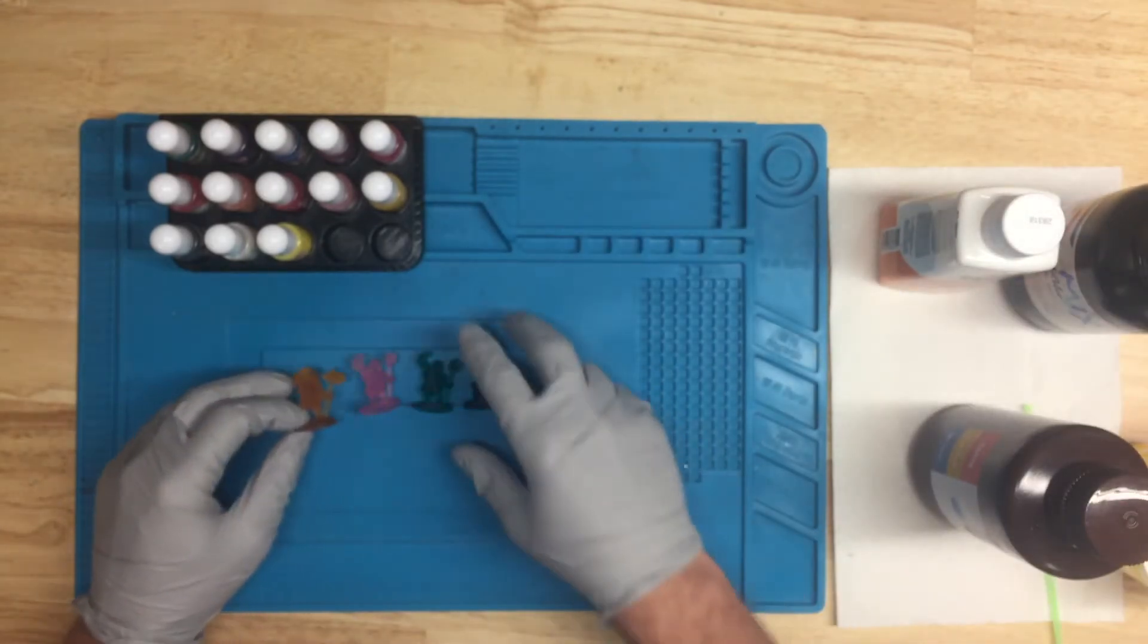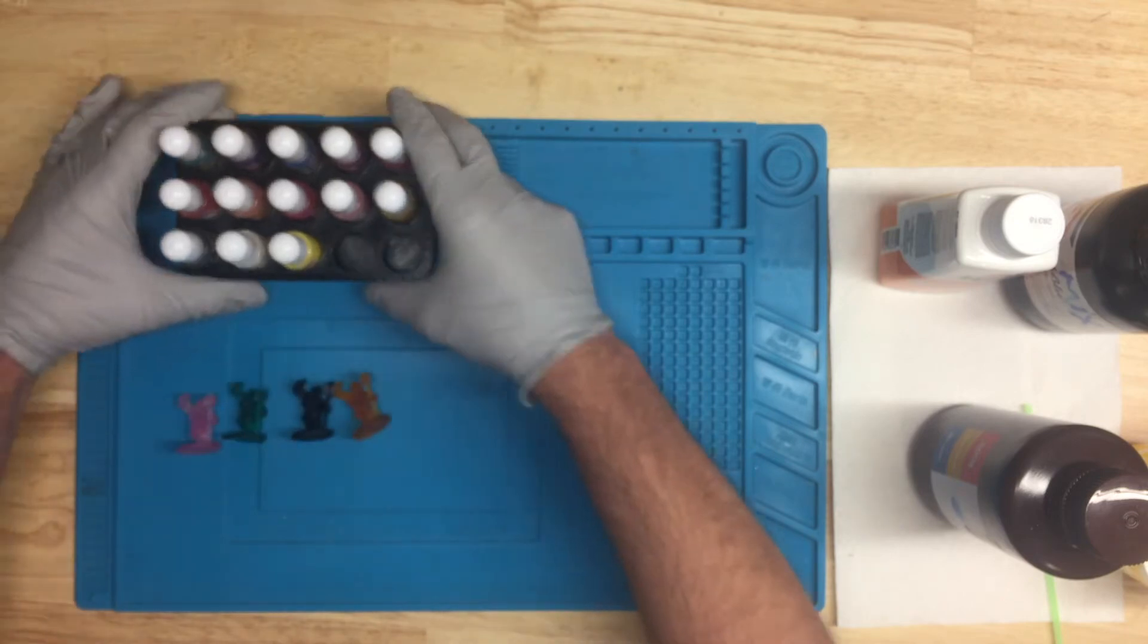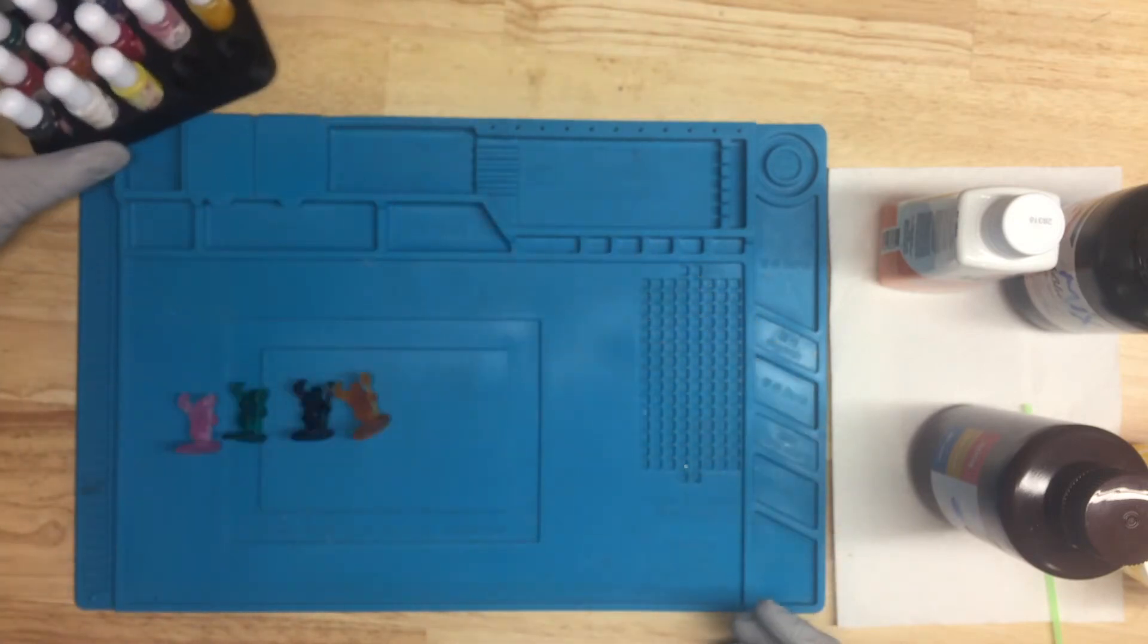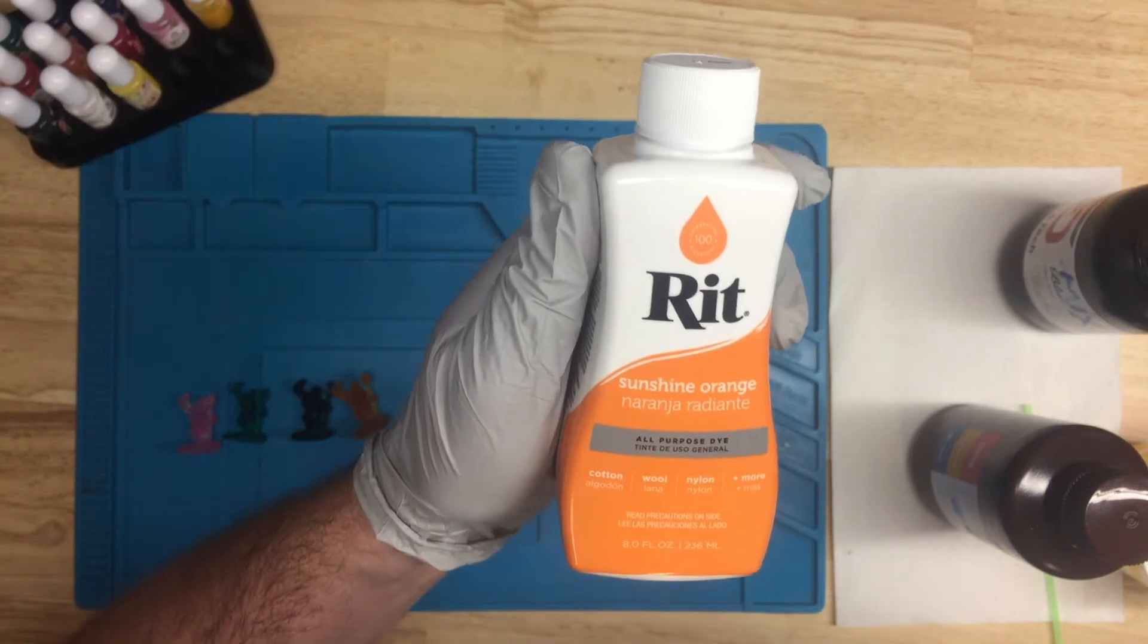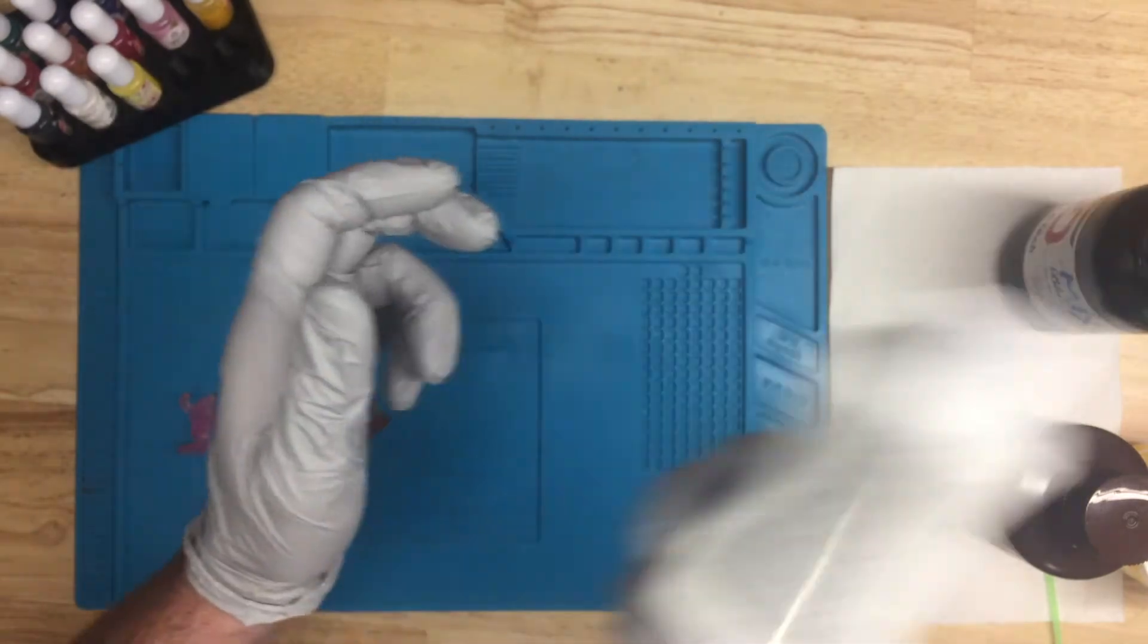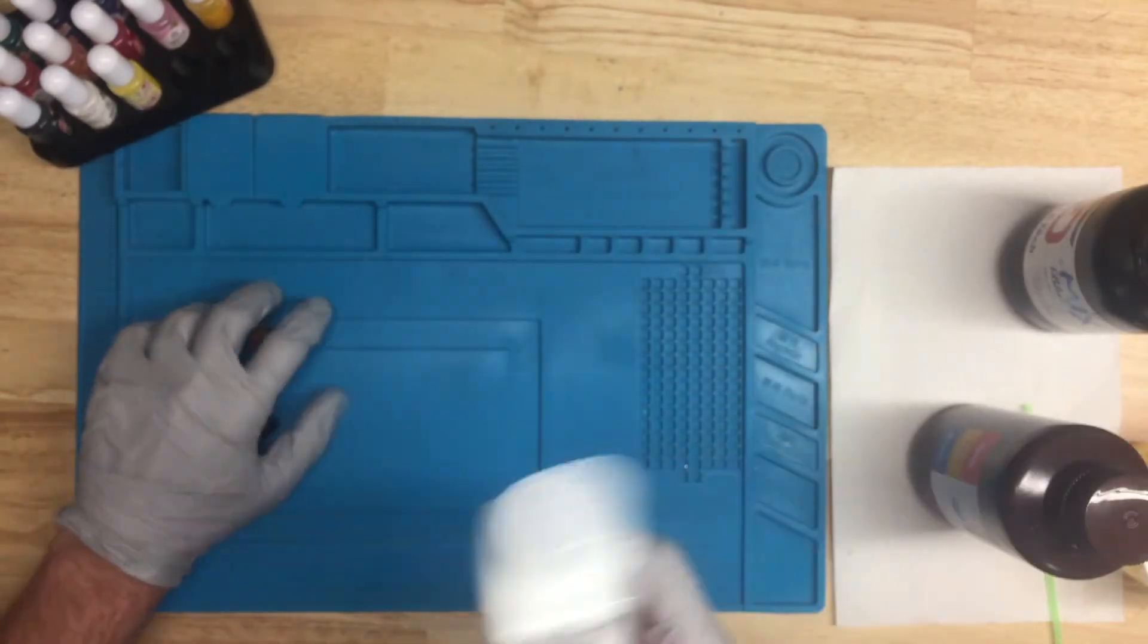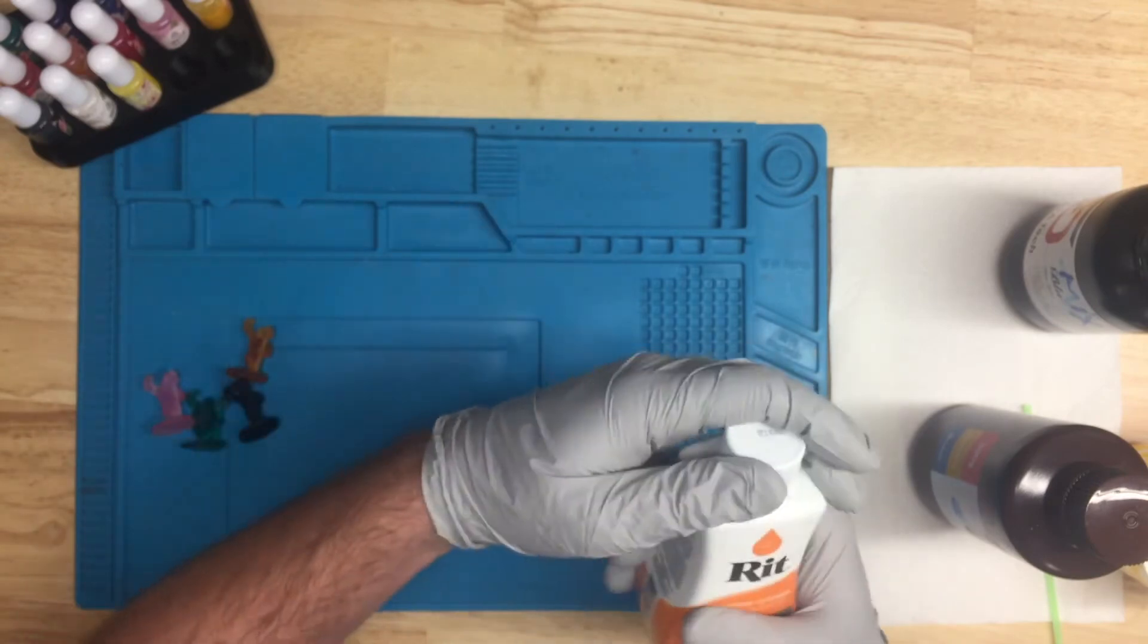Now, the last thing I want to try is what happens if we don't use these and we use this. This is RIT. This is an all-purpose dye. It's mostly used for clothing. Let's see if we can use it with UV resin.